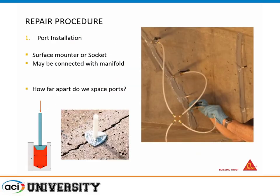Now to get into the repair procedure. After preparation, the first step is port installation. You can have a couple different types of ports: surface mounted or socket type. Surface mounted is probably the most typical. Socket type ports are usually used when you don't have access from the surface — if there's something in the way, some type of calcification, or the crack is very narrow at the surface but wider at the base. You can use a manifold to inject a couple ports at once, but typically in normal applications you're just doing one at a time.